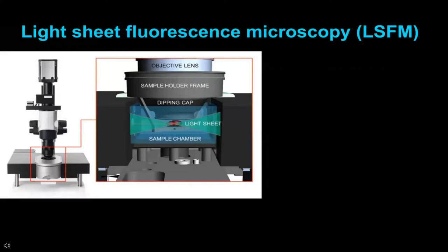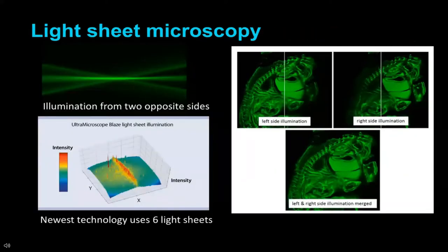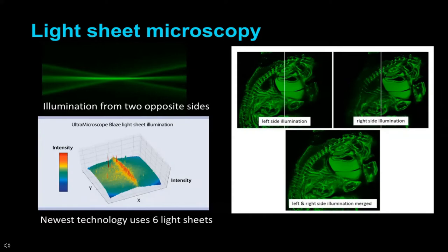Light sheet microscopy—the principle is very simple. The illumination comes not in the same direction as the lens, but perpendicular to the imaging lens. Often you will see illumination from both sides. The light sheet is stable but the sample moves up and down so you can capture the whole sample. The newest technology, such as the UltraMicroscope Blaze, uses six sheets of light—three from each side—and you gain more detail by using illumination from both sides.